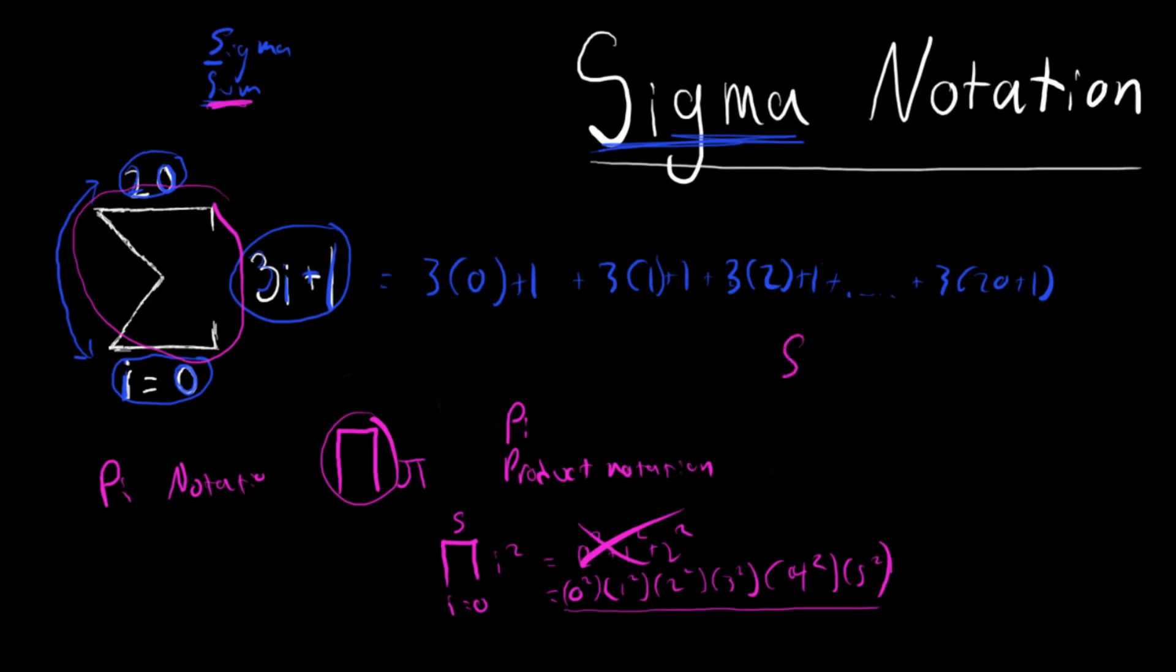So we have sigma, which equals sum, and it's characterized by the Greek letter sigma. And then we have pi, which equals product, and it's characterized by the Greek letter pi, which I really enjoy.